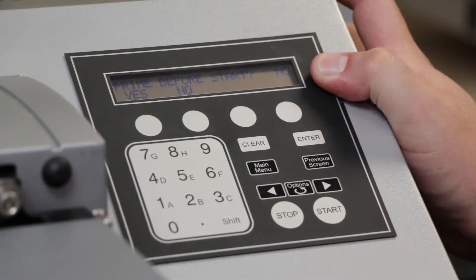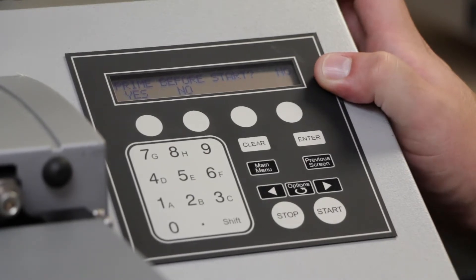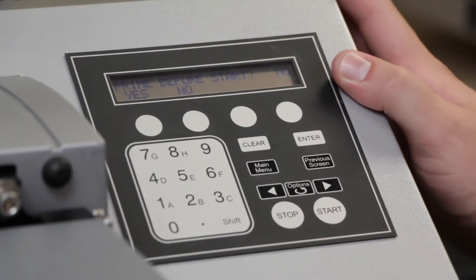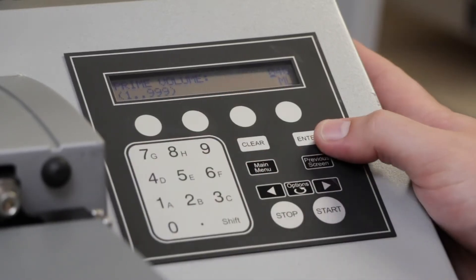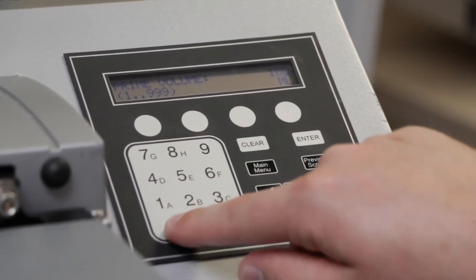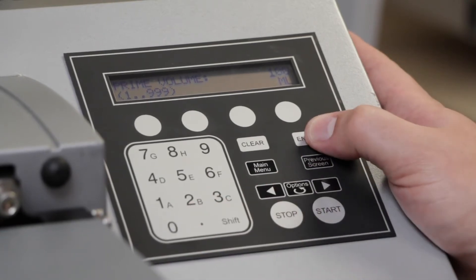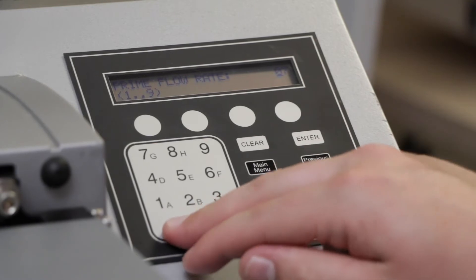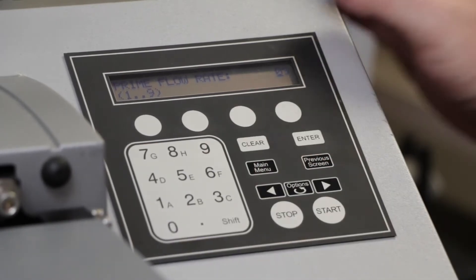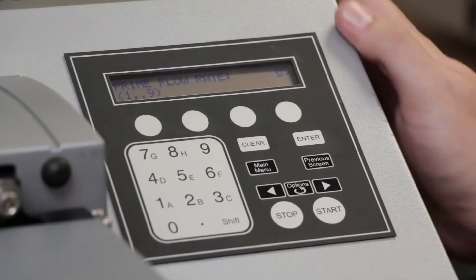Prime before start is a great way to make sure that your washer is primed and ready to go before running a wash protocol. We'll tell it to run 100 milliliters of water through the system before we wash. Our prime flow rate will actually turn up to 9, though admittedly these values don't matter too much as we'll be priming into the trough anyway.